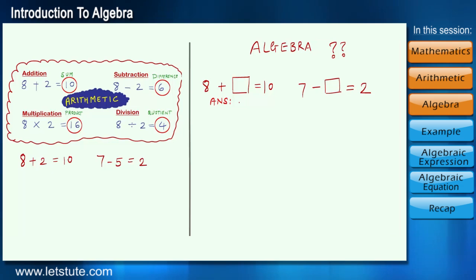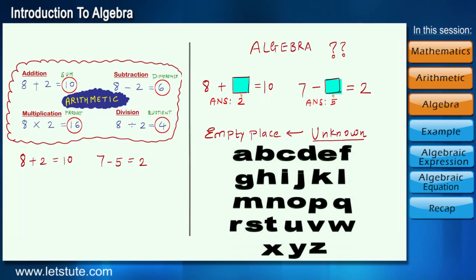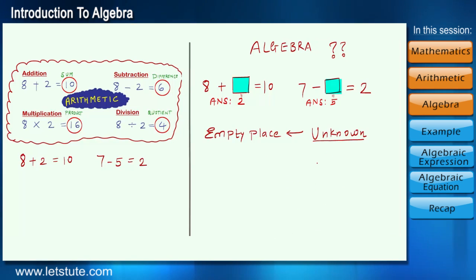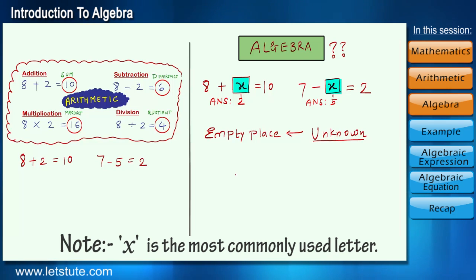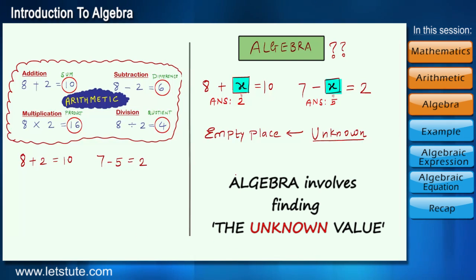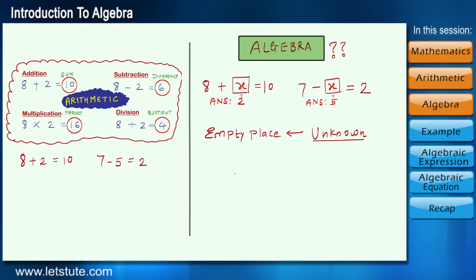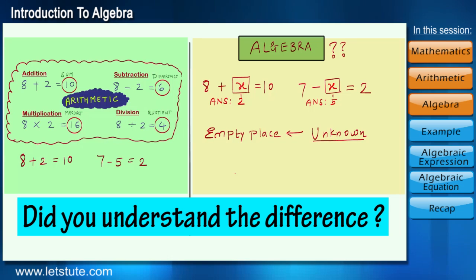The answers for these blank places are 2 and 5. Here what we are actually doing is finding the value of the empty place which we don't know yet. Hence this empty place is also called the unknown. But every time we cannot use words like empty place or unknown, so in algebra we denote this unknown value by an alphabet, and it can be any letter: a, b, c, or x, y, etc. So instead of keeping it blank we use an alphabet, and therefore algebra simply means finding the value of unknown numbers.